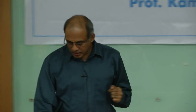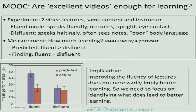The expectation was that students of the well-delivered video would learn better. But when they measured learning using a test, they found that even though the expectation was very different — people expected that in the case of the fluent video students would learn a lot and in the disfluent video very little — actually there was no difference in the amount of learning that happened. This tells us that simply improving the fluency of lectures does not necessarily imply better learning.